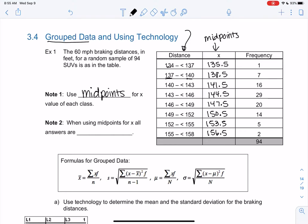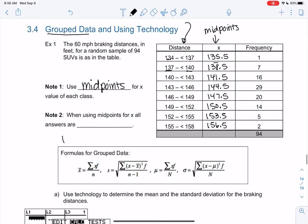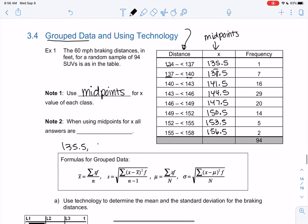So rather than using the raw data, what we're going to do is we're going to assume we have 135.5 and it shows up once. We're going to assume we have 138.5 and it shows up 7 times. So it repeats, 7 of them. And then 141.5 shows up 16 times. So rather than writing this out, we're going to let the calculator figure that out for us.